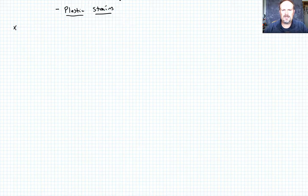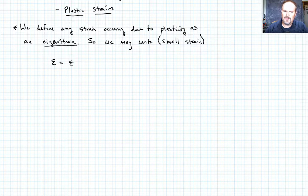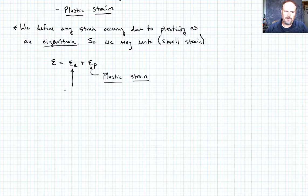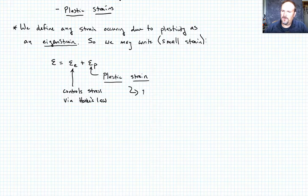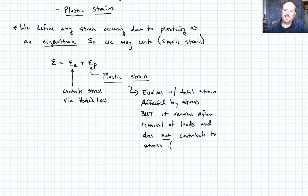For the purposes of this class, we're going to define any strain due to plasticity as an eigenstrain. For the small strain case, we write the total strain as the sum of the elastic component epsilon_e plus the plastic component epsilon_p. The elastic component controls the stress via Hooke's law. The plastic strain evolves with total strain, is affected by stress, but remains after removal of any loads and does not contribute to the stress macroscopically.